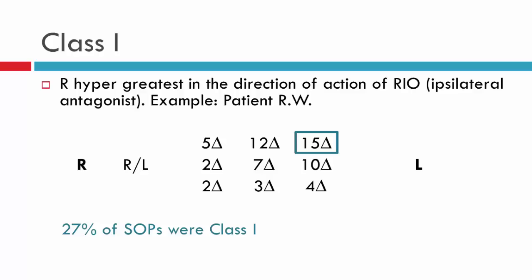Class one. In this particular instance, the right hyperdeviation is greatest in the direction of the action of the ipsilateral antagonist. Here we have an example of nine positions of gaze — this is right gaze, this is left gaze — and the measurements reflect the vertical deviation or the right on left. The greatest deviation is in levo elevation, where the right inferior oblique has its action, where the ipsilateral antagonist has its action. The inferior oblique overaction is greater than the superior oblique underaction.